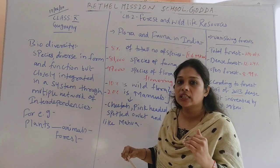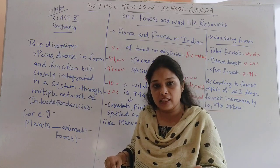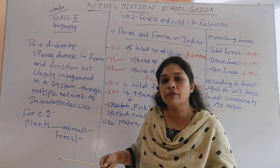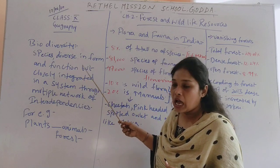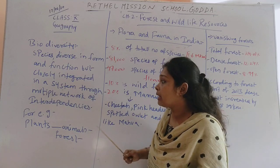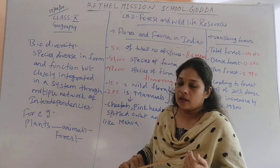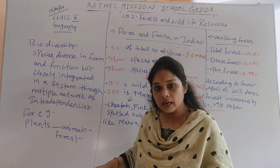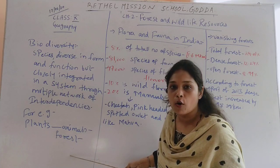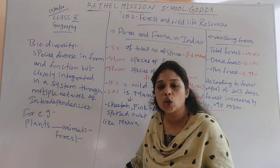Biodiversity means two things. First, all species in the world have a different form — they look different, their features are different, their nature is different, and the functions they perform in the environment are also different. But these different species are interrelated and create a multiple network of interdependency — all species are dependent upon each other — which creates the biodiversity and ecological system of the world.